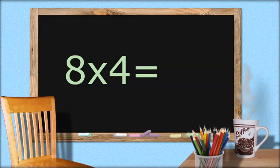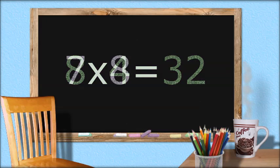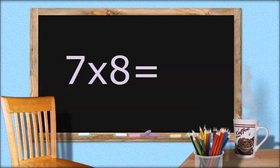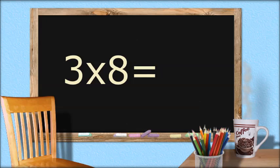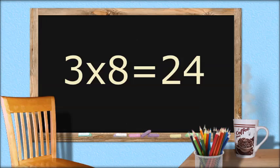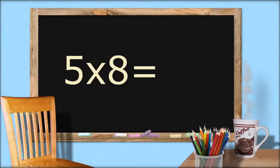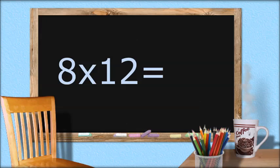8 times 4 equals 32. 7 times 8 equals 56. 3 times 8 equals 24. 5 times 8 equals 40. 8 times 12 equals 96.